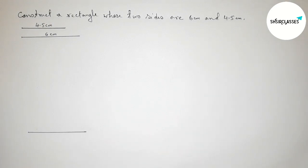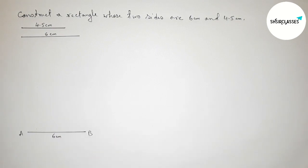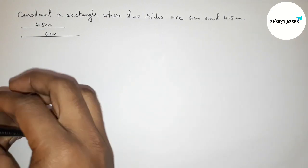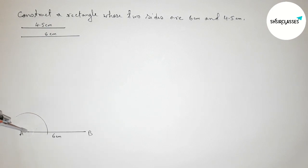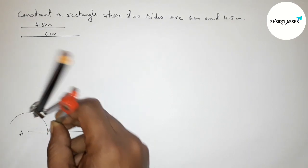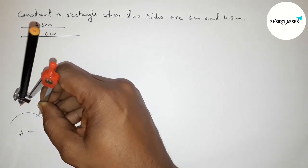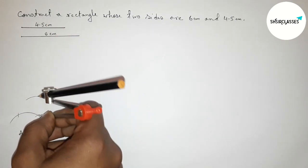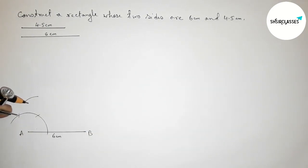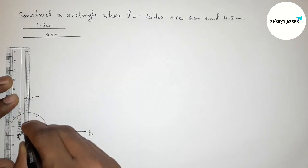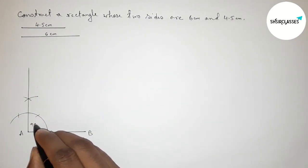Taking here a point A and here B, so AB is a 6 centimeter line segment. Next we have to construct a 90 degree angle on the point A. Putting the compass on point A and taking any length, first drawing an arc, then taking the same length and cutting here. Putting the compass here, drawing an arc and cutting here, then again with the same length cutting here. Joining this line to get a 90 degree angle — we got a 90 degree angle.